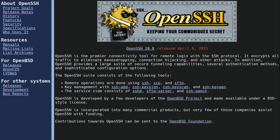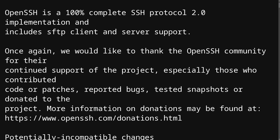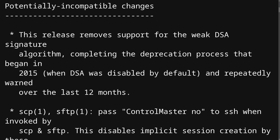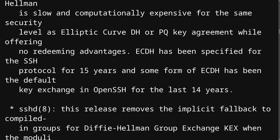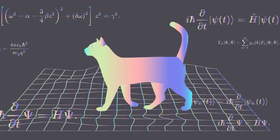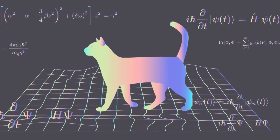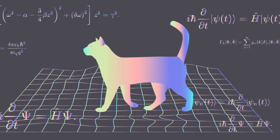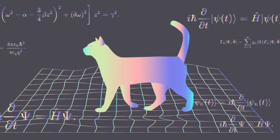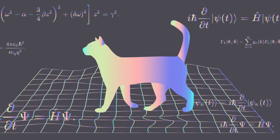OpenSSH version 10 has finally been released with some very important updates, the most interesting one being the switch to using post-quantum algorithms for secure key generation by default.